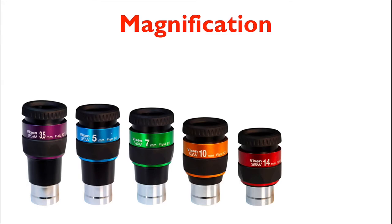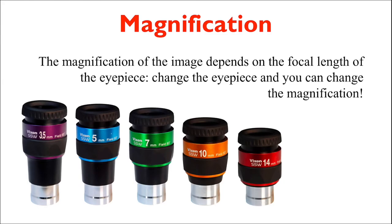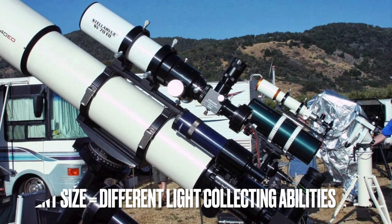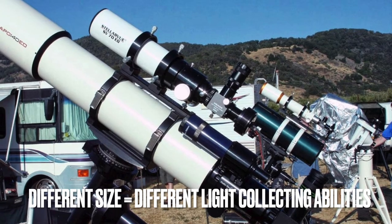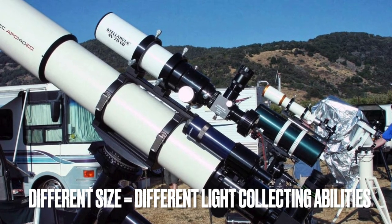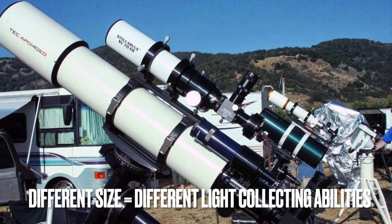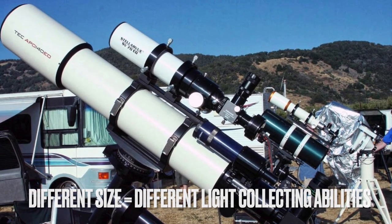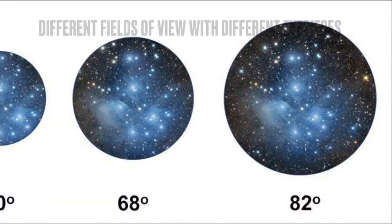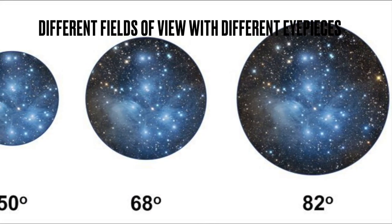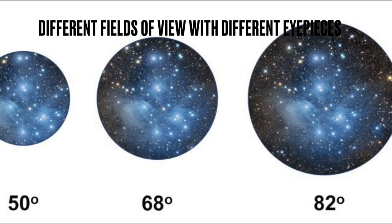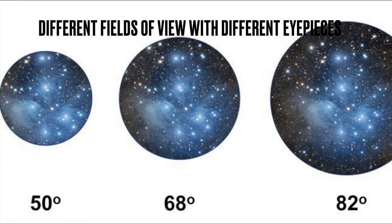The magnification of the image depends on the focal length of the eyepiece. Change the eyepiece and you can change the magnification of your telescope. So the telescope is actually limited in terms of how much light it can collect depending on its size, but how close up you can get to the object you're viewing — how zoomed in you can see — depends on the magnification of the eyepiece.